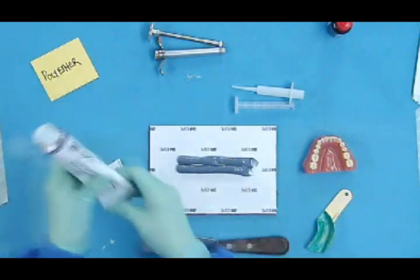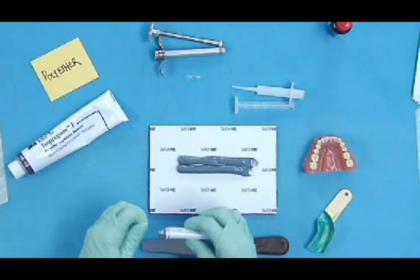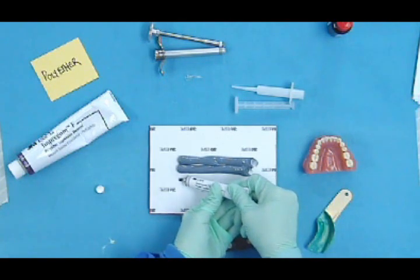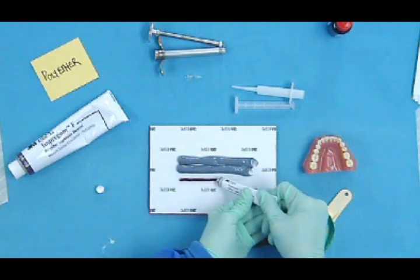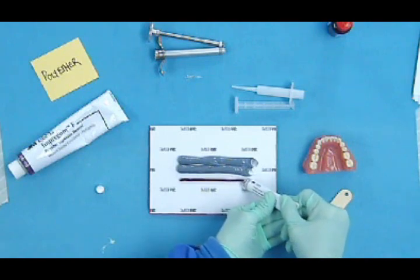This is one of the prettier impression materials because you can see that that's kind of gray looking, but our catalyst, which is in a tiny tube, is red. So when we mix them together, we're going to get a pretty purple material.